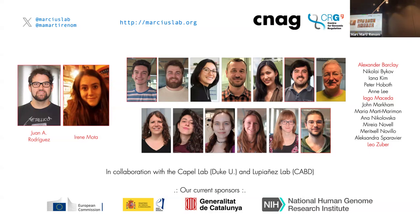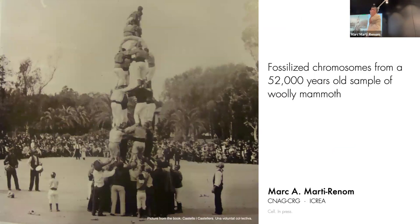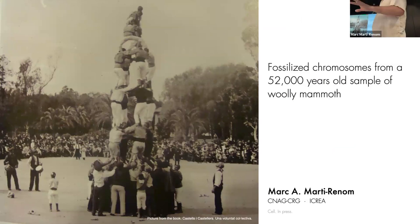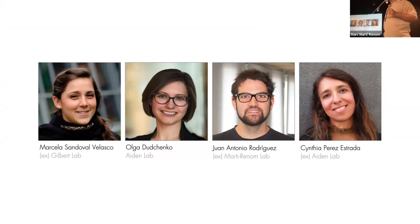Now for the second story — going to be published in Cell in about two weeks. We call it 'fossilized chromosomes.' We took a sample 52,000 years old and did Hi-C on it — and the structure is still there. It's mammoth. The sample comes from Siberia. This was driven by the Gilbert lab and the Aiden lab, with Olga being instrumental, and Marcella and Cynthia doing the initial experiments. This is a 10-year-old project with a lot of failure before it worked.